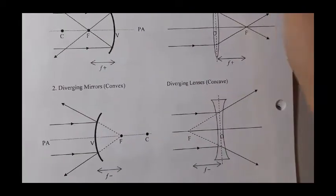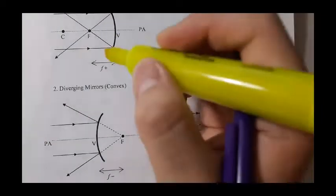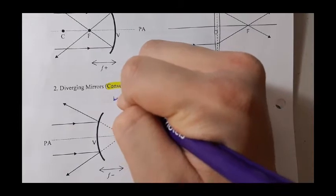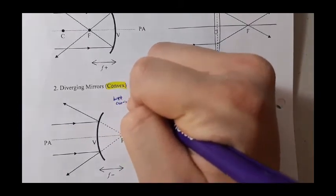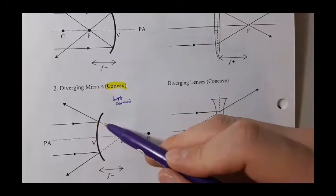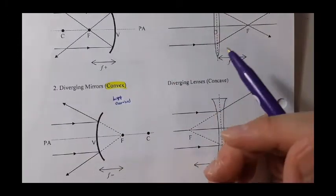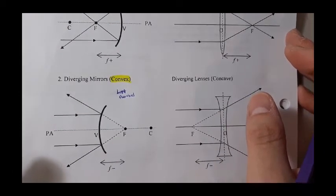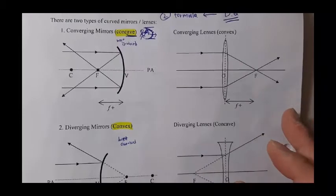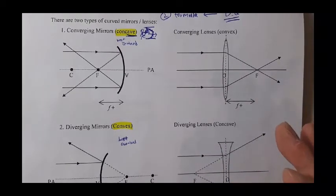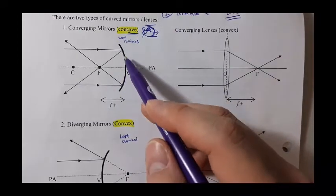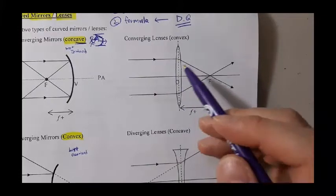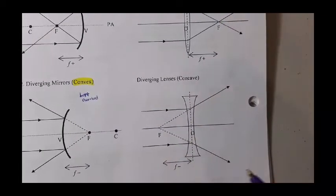Convex, on the other hand, is the opposite. I call it the fat type because it is bent outward — think of a big belly situation. Rather than using the terms converging mirror or diverging mirror, I'm going to use the words concave shape mirror and convex shape mirror. Same thing applies for convex lens and concave lens.